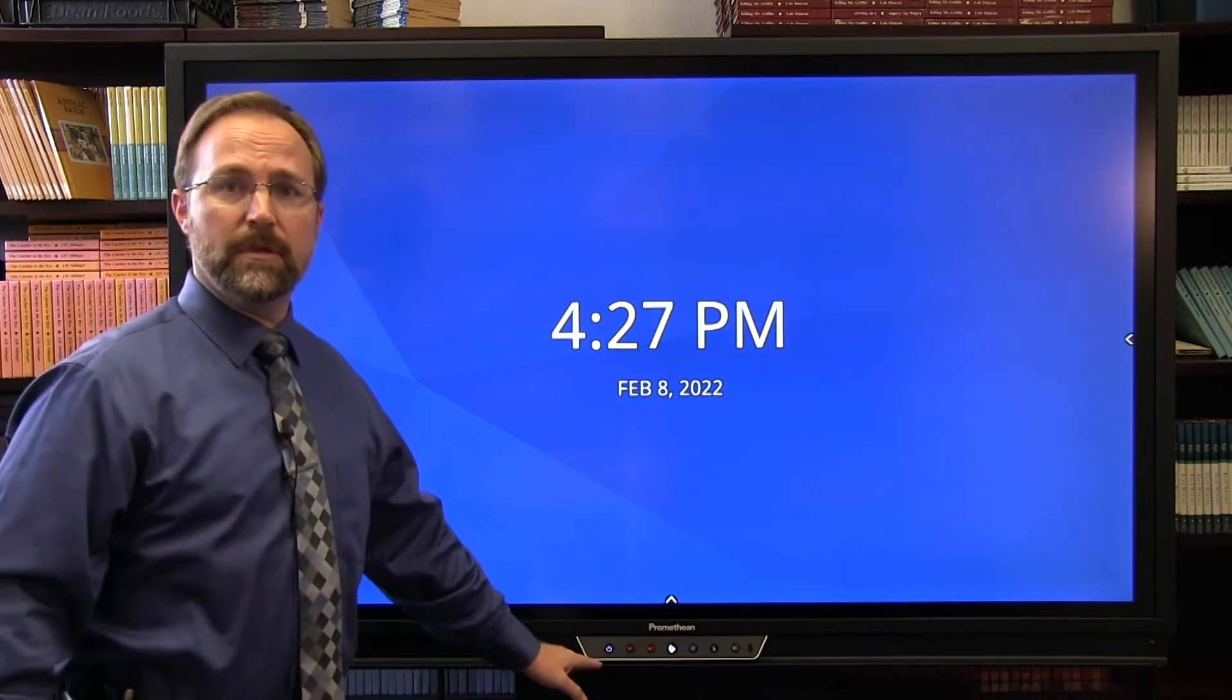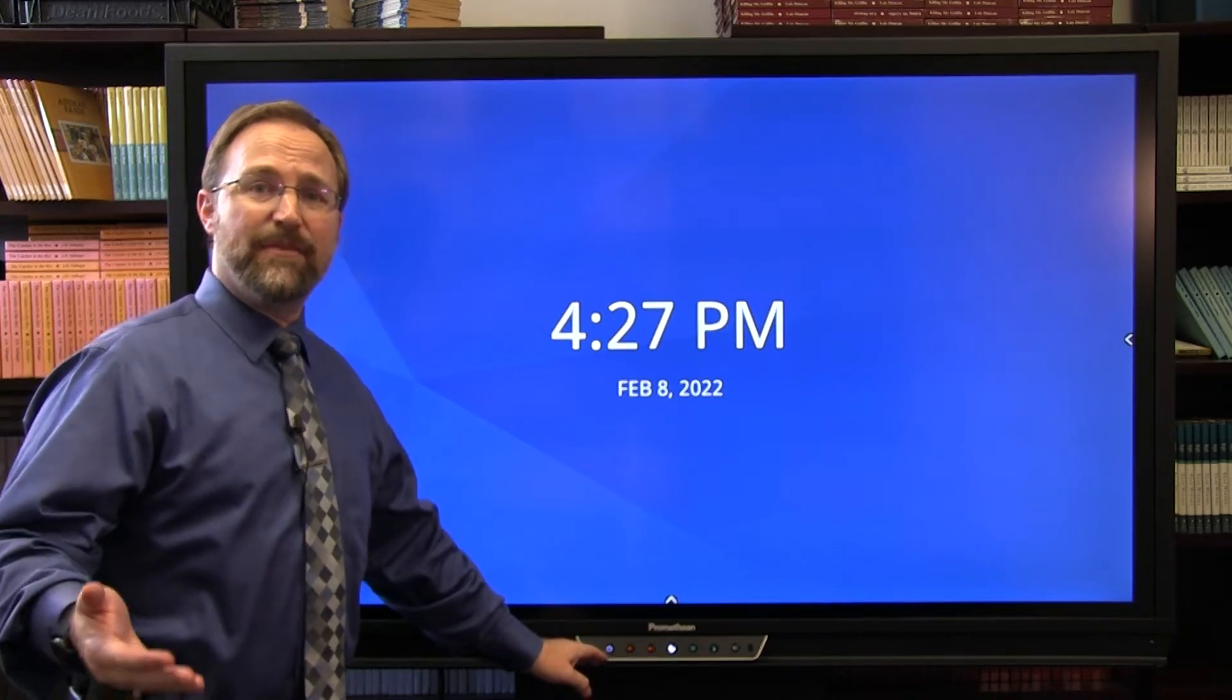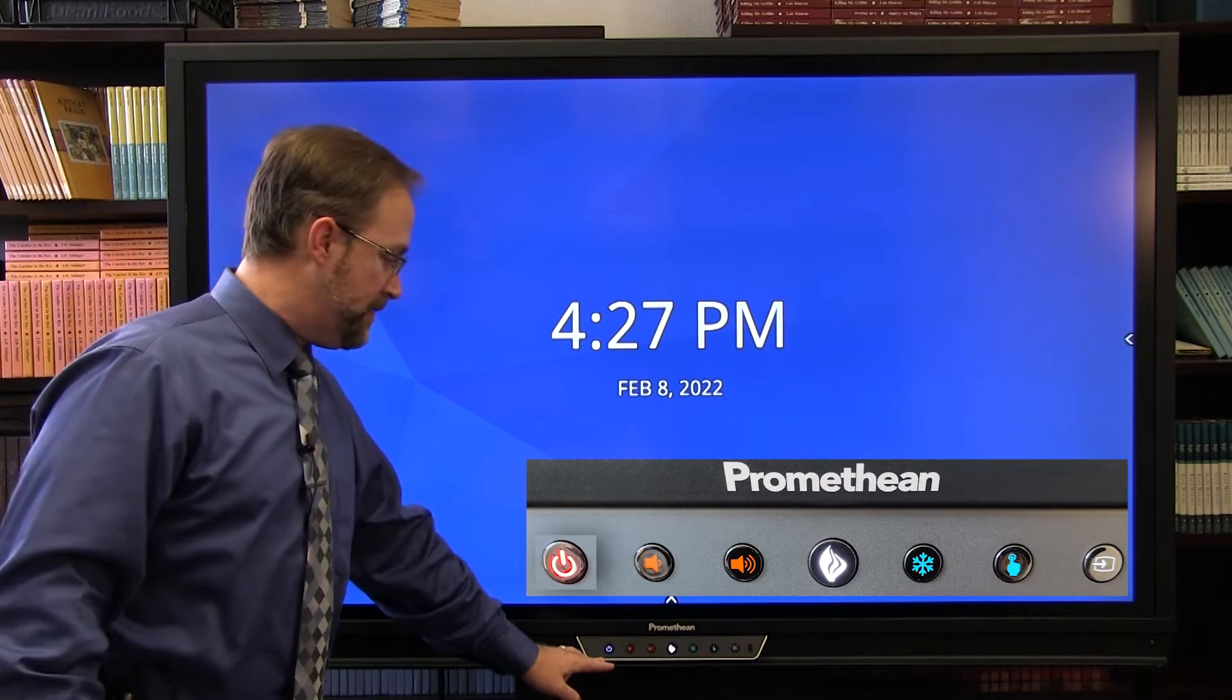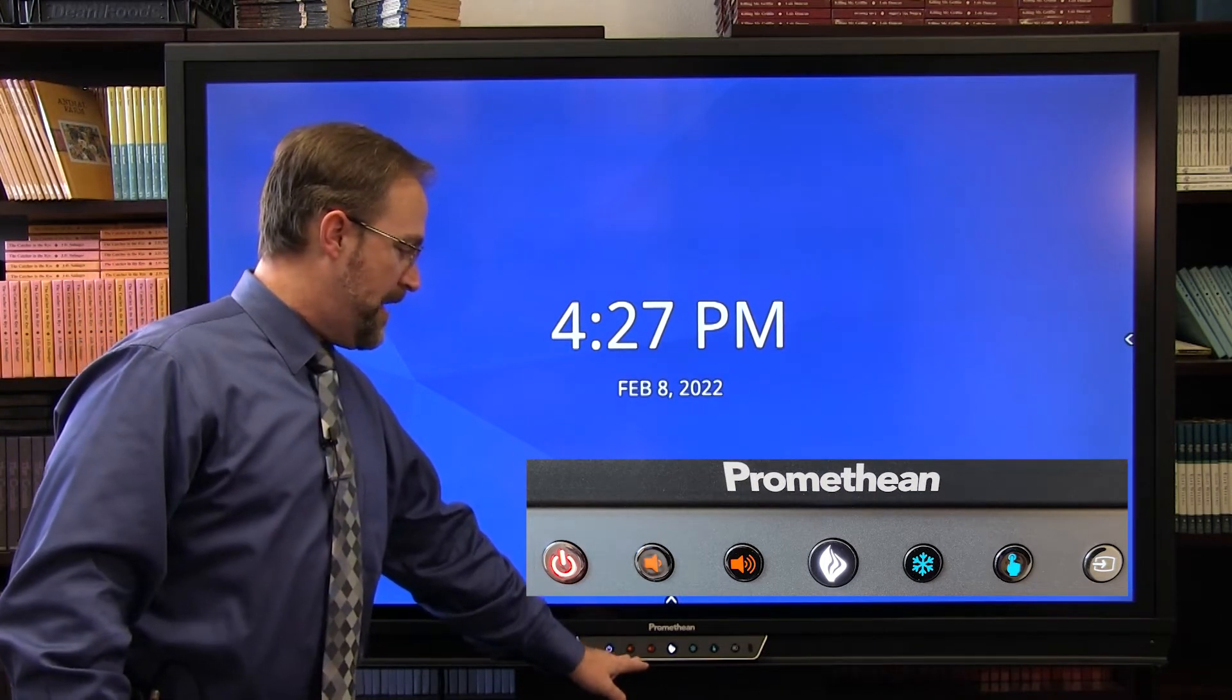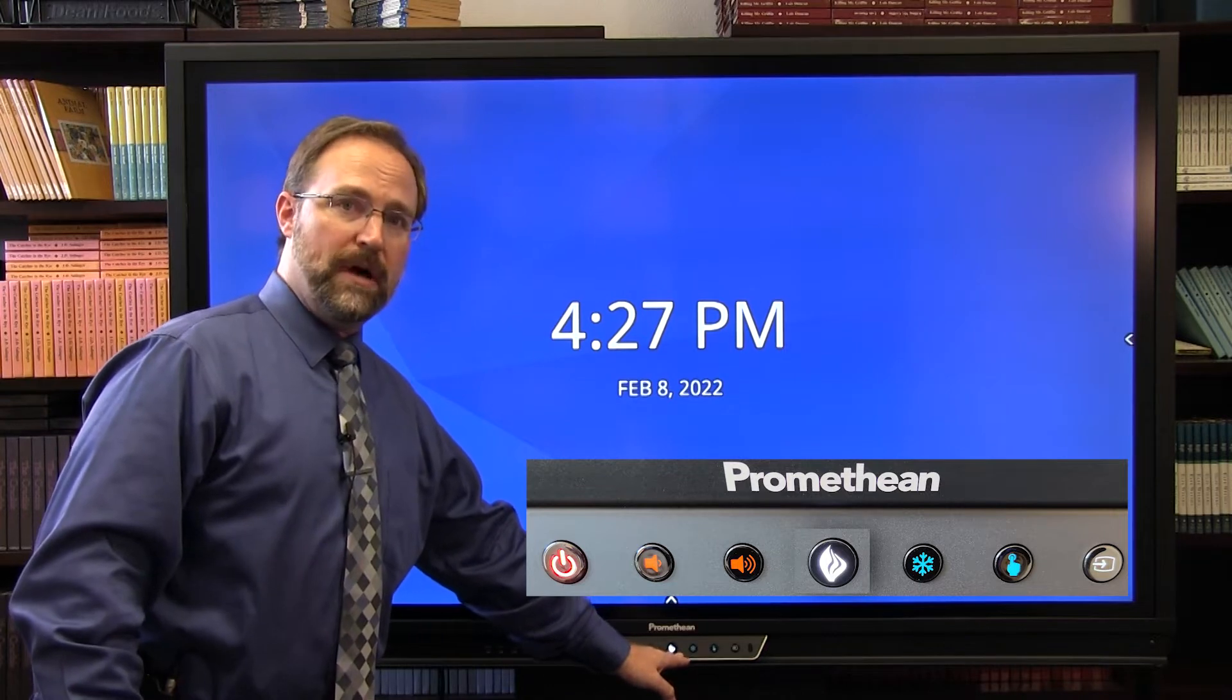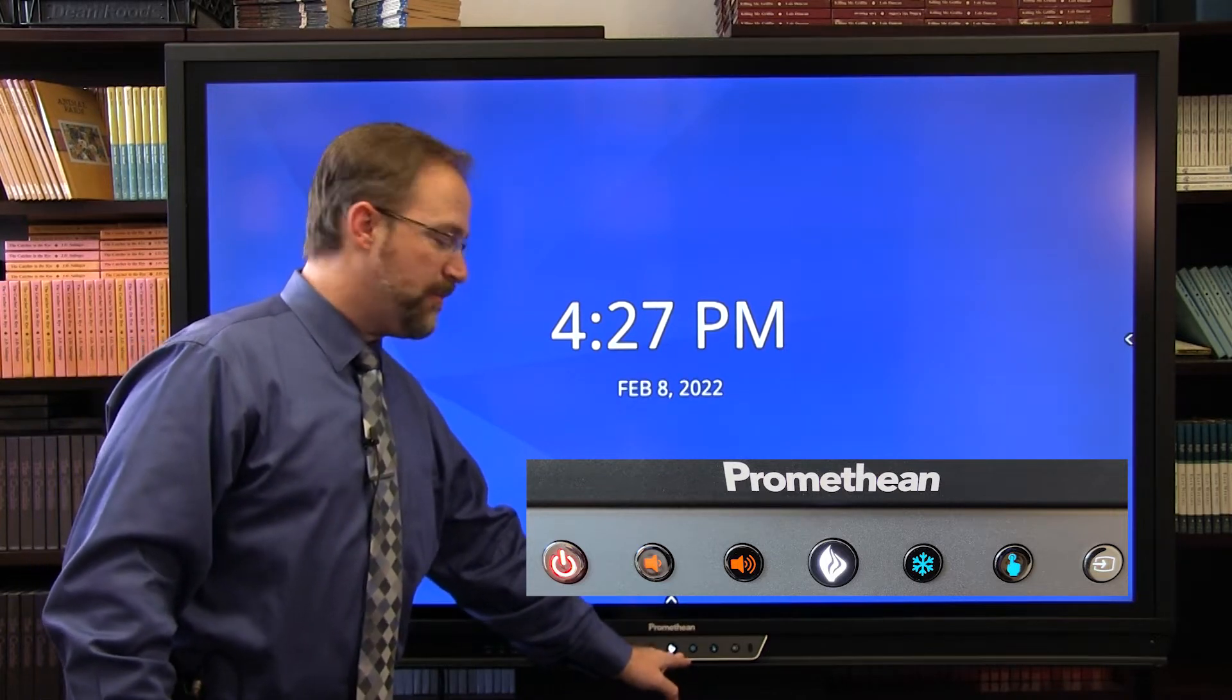You'll notice at the very bottom here in the center you have kind of a home row of sorts. Starting on the far left you do have your power button, then next you have your volume down, volume up, your home button, which is the Promethean flame.